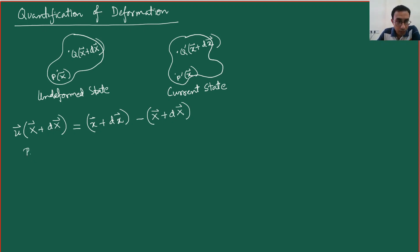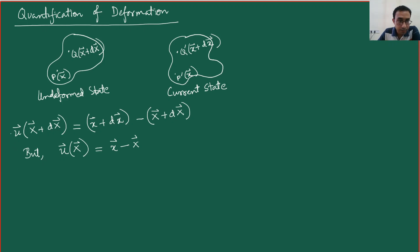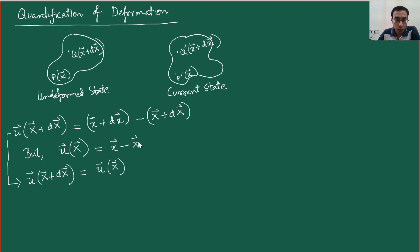We know from our previous discussions that the displacement vector for point P, u(X), is nothing but small x minus capital X. Note that in the previous equation, small x minus capital X is already present, so we may write that the displacement vector for point Q equals the displacement vector for point P plus the remaining terms.